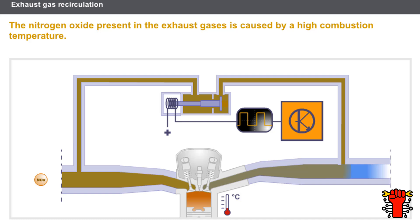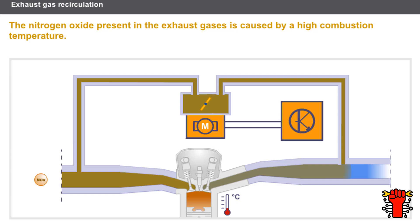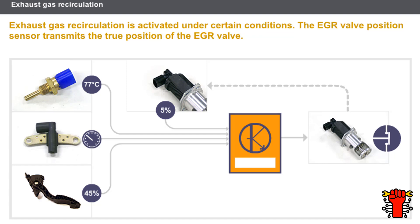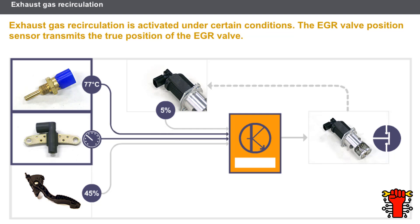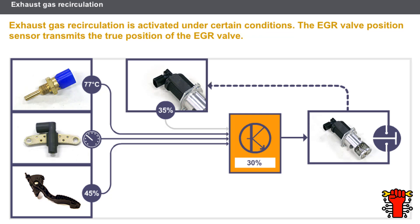The EGR valve may appear in the following forms: as a valve activated by an electromagnet, or as a valve activated by an electric motor. The conditions generally required to enable exhaust gas recirculation are: a warm engine, engine at an average speed, and the accelerator pedal position at an average load. Depending on the various parameters, the computer determines the required rate of recirculation and controls the EGR valve. The EGR valve position sensor transmits the true position of the EGR valve so the computer can adjust the valve control.